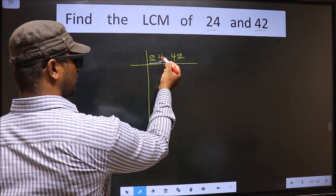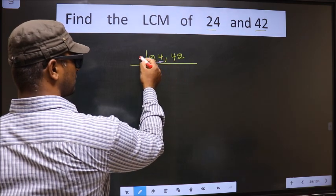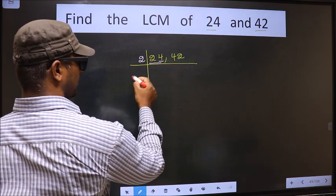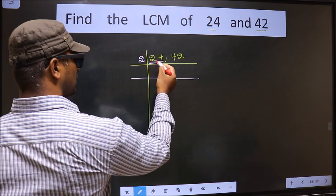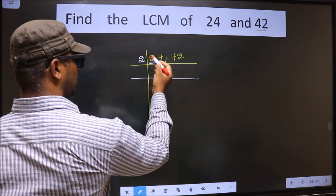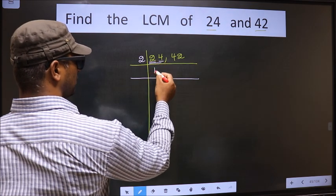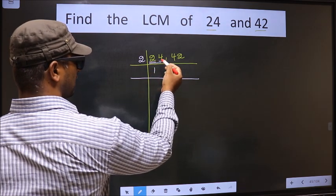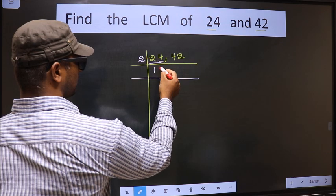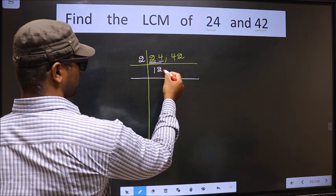The last digit is 4, ends in an even digit, so we take 2 here. The first number is 2 — when do we get 2 in the 2 table? 2 times 1 is 2. The other number is 4 — when do we get 4 in the 2 table? 2 times 2 is 4.